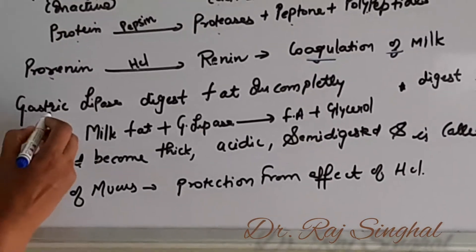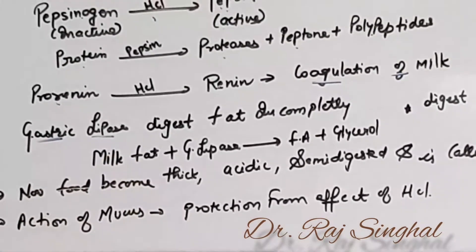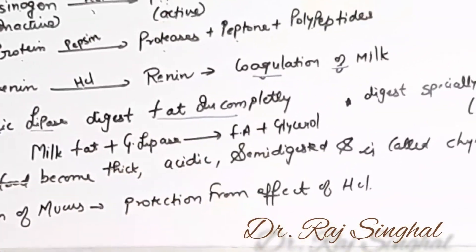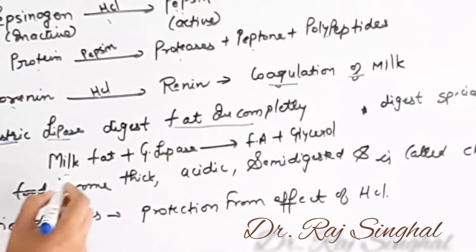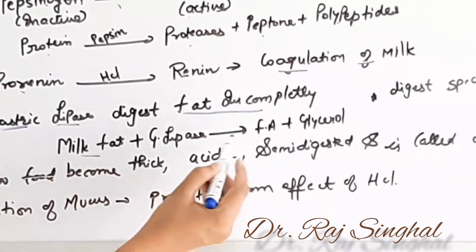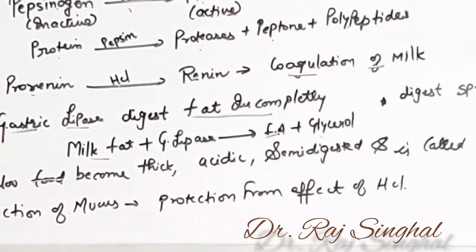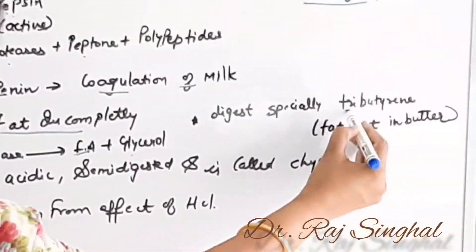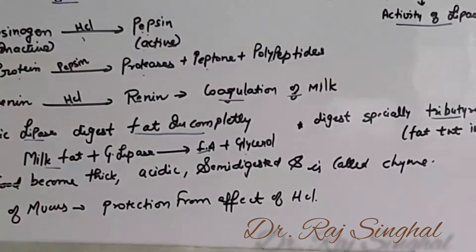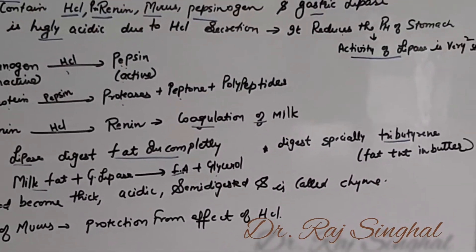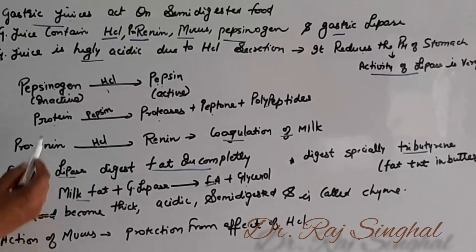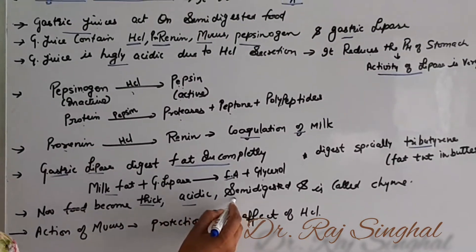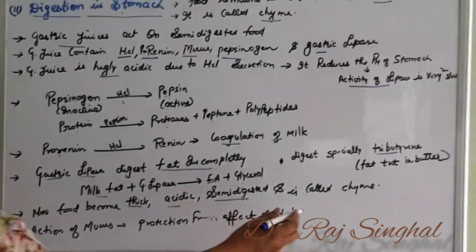The reduced pH makes the activity of lipase very slow, and because of this, fats are digested incompletely. Milk fat, however, is digested to a small amount into fatty acids and glycerol. In the stomach, specifically tributyrin — the fat present in butter — is semi-digested. After this digestion of protein, the food becomes thick, acidic, and semi-digested, and is known as chyme.